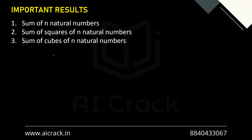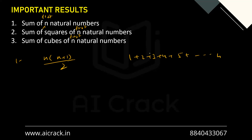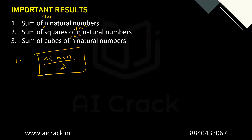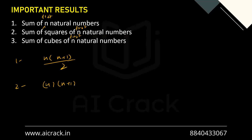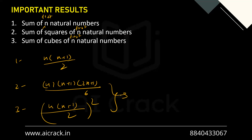Let's talk about important results. Sum of first n natural numbers: n(n+1)/2 — derivable using the AP sum formula on 1 + 2 + 3 + ... + n with a=1, d=1. Sum of squares of first n natural numbers: n(n+1)(2n+1)/6. Sum of cubes of first n natural numbers: [n(n+1)/2]². The latter two cannot be derived from the AP formula but must be memorized. You'll use these in limits and other progression problems.